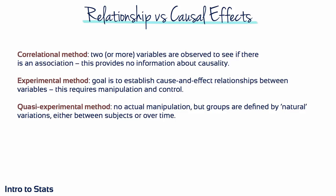Some research studies are conducted simply to describe individual variables as they exist naturally, but most research is intended to examine the relationship between variables. Three important types of study are correlational studies, experimental studies, and quasi-experimental studies.